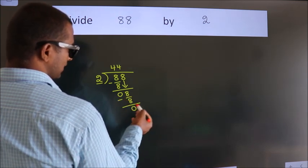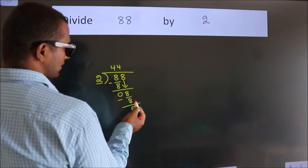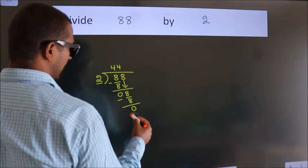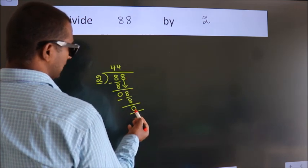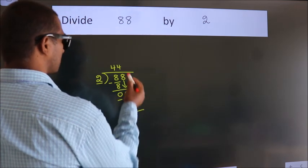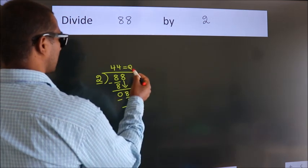After this, no more numbers to bring it down. And we got remainder 0. So, this is our quotient.